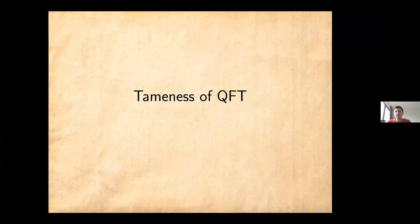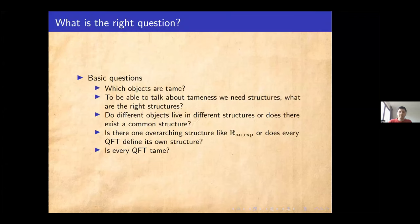After this short introduction to tameness, let me come to tameness in quantum field theory. To talk about this, we first need to ask: which objects are we actually interested in — what should be tamed? We need structures: what is the right structure? Is it R_an, is it R_an,exp? Do different objects in a QFT live in different structures? Could the partition function be in a simpler structure than the correlators? Or is there one overarching structure encapsulating everything? And perhaps a bit of a trivial question: is every quantum field theory tame, or do we actually get constraints out of tameness that we can use as a swampland criterion?